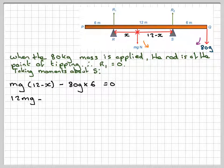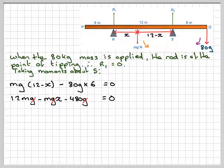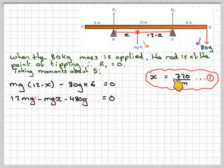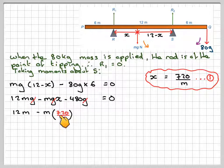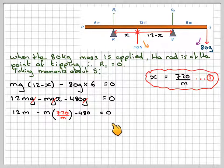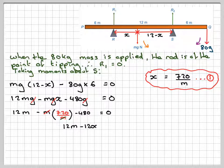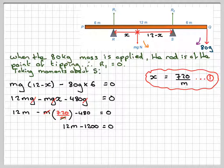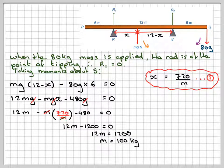So expanding, we're going to have 12Mg minus MgX minus 480G is equal to zero. Now the G's will all cancel out. So 12M minus MX minus 480 is equal to zero. The M's now cancel out. 12 minus X minus 480 equals zero. 12M minus 1200 is equal to zero. So 12M is equal to 1200, so M will be equal to 100.